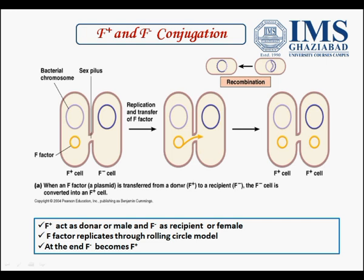In F positive and F negative conjugation, F positive means this bacterium is male or donor, and F negative acts as a recipient or female. Here we can see the bacterial chromosome and the F factor in the F positive cell; in the F negative cell there is no F factor. The F factor replicates through the rolling circle model and is transferred into the F negative cell. In the third step, F negative becomes F positive because of the presence of that F factor.